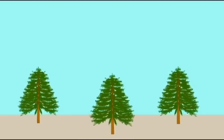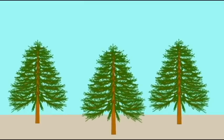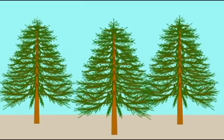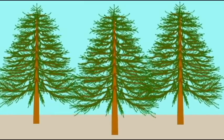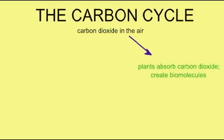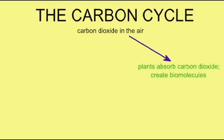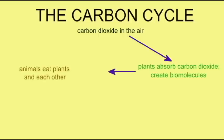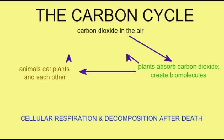Thus, we can speak of a carbon cycle. In this cycle, carbon dioxide is removed from the air and converted into the stuff of living things when plants perform photosynthesis. Animals can eat these plants and then convert plant biomolecules into animal biomolecules. And the carbon which is now stored in living things can be returned to carbon dioxide in the air through cellular respiration and decomposition of dead plant and animal material.